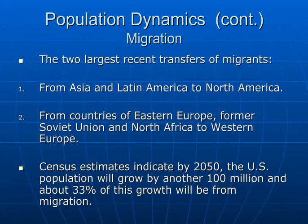And migration? We are seeing some of the most recent transfers of migrants from Asia and Latin America to North America. We've also seen migration from countries of Eastern Europe and the former Soviet Union, which suffered through the early 90s with the change from communism to basically chaos. A lot of migrants moved to the U.S. and other countries from Russia. Census estimates indicate that by 2050, about 33% of the population growth we'll see in the U.S. will be due to migration.